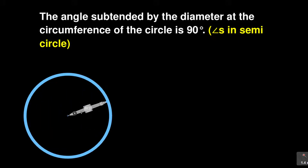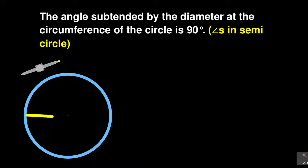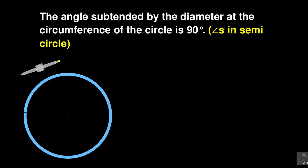So we have a circle and they are saying the angle subtended by the diameter. Now what is a diameter? Remember, a diameter is the longest line that passes through the center. It's a chord, but that particular chord is a chord that passes through the center. So if I'm able to draw a diameter, it would be a line like that passing through the center.